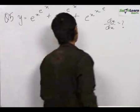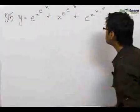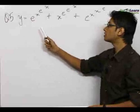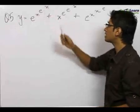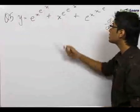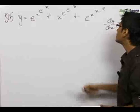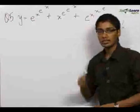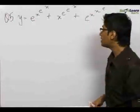The fifth problem, which is also very interesting, gives us y equals e to the power x to the power e to the power x, plus x to the power e to the power e to the power x, plus e to the power x to the power x to the power e. We need to find dy by dx.